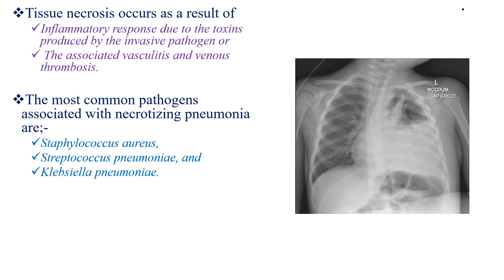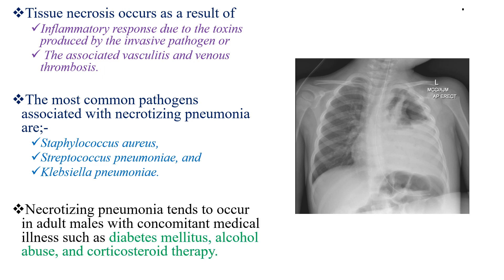The most common pathogens associated with necrotizing pneumonia are Streptococcal pneumonia, which is the most common cause, followed by Staphylococcus and Klebsiella pneumonia. Necrotizing pneumonia tends to occur in adult males with concomitant medical conditions such as diabetes, alcohol abuse, and corticosteroid therapy. In contrast, pediatric patients are predominantly composed of healthy female children.